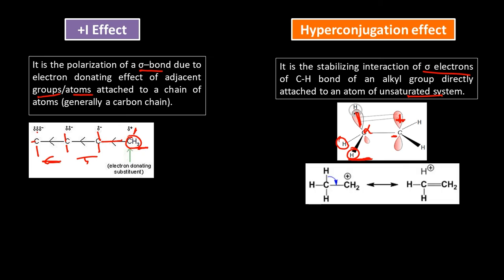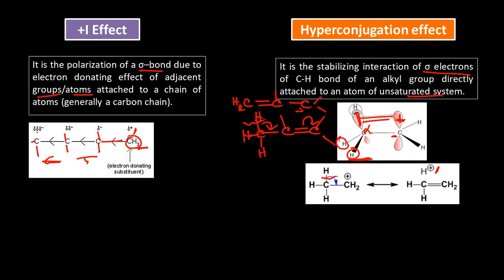When you have a C–H bond adjacent to a carbocation, the sigma electron present in that C–H bond will interact with the vacant p orbital. If you break this C–H bond, a newly generated C=C double bond forms and H⁺ remains in proximity. Similarly, if CH3 is beside a C=C double bond, breaking the C–H bond gives negative charge over that carbon and a newly generated double bond — this is also hyperconjugation.